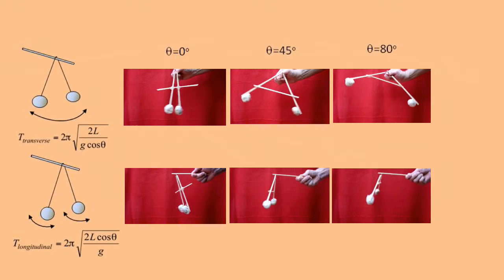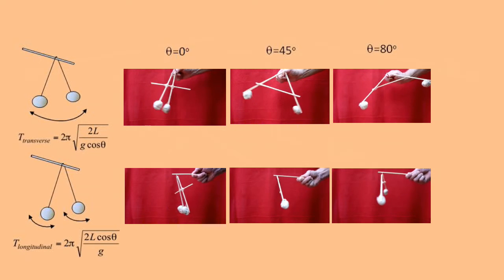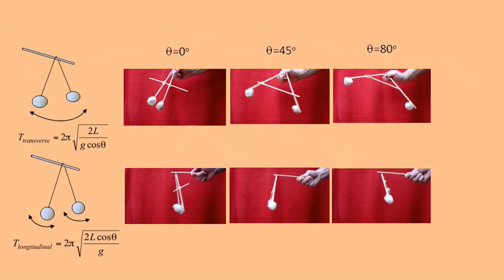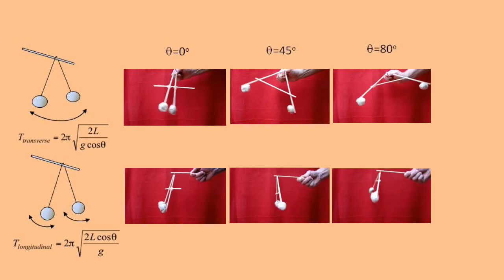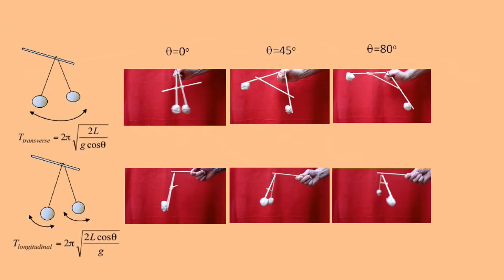When θ is 80 degrees, 1/cos θ is about 6. So the transverse oscillation is much slower than the longitudinal oscillation.